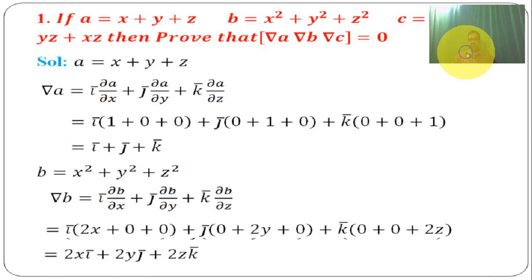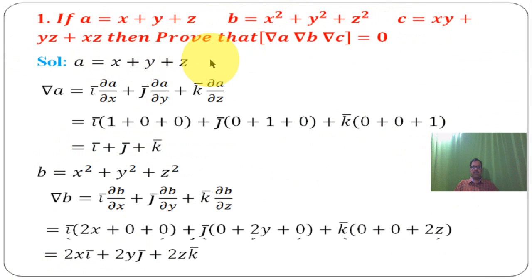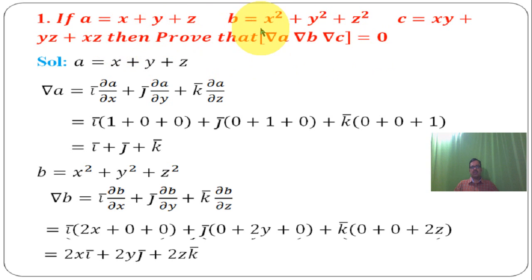Problem 1: If a = x + y + z, b = x² + y² + z², c = xy + yz + xz, then prove that the box product of grad a, grad b, grad c is equal to 0. First, find grad a, grad b, and grad c.